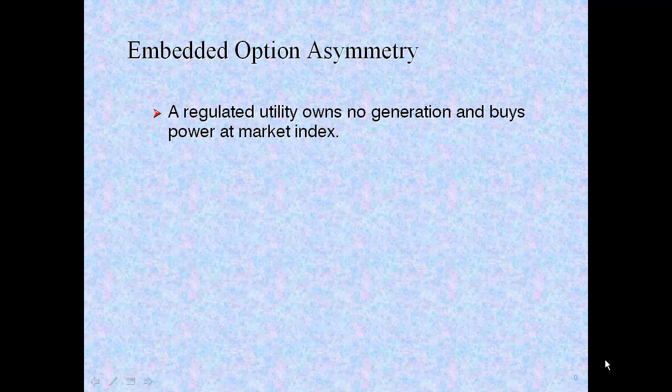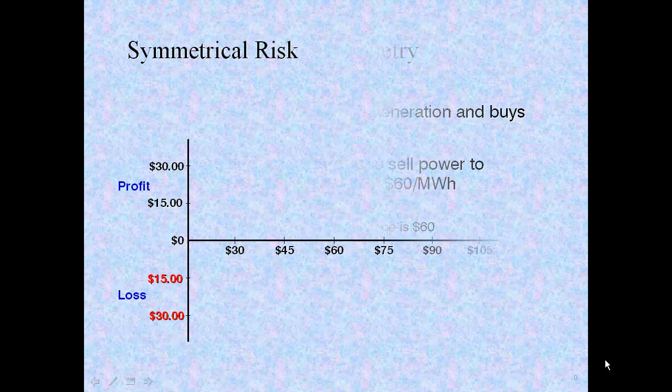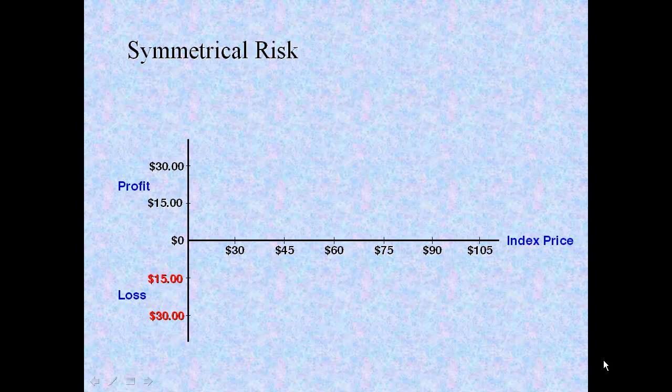Now, let's apply these concepts in a practical example of an option embedded in existing business operations. Remember, we are looking for payout asymmetries as indications of embedded options. In this example, consider a regulated utility who owns no generation. So it buys power at market index. But it is required by regulators to sell power to its customers at a fixed price of $60 per megawatt hour. Current wholesale power price is also $60. The utility sells power at a fixed price of $60 and sources the power paying the index price. If the index is also $60, the utility will break even. If the index rises to $90, selling at $60 and buying at $90 generates a $30 loss. If the index falls to $30, selling at $60 and buying at $30 produces a $30 profit. Connecting the dots, we again have a straight downward sloping line. This is symmetrical risk. So at this point, there is no indication of an option.